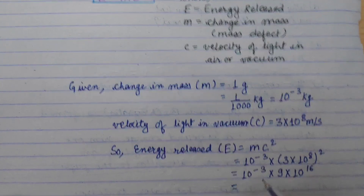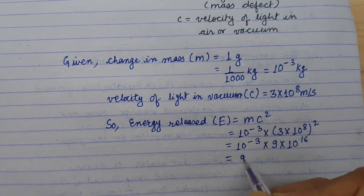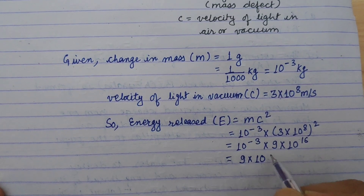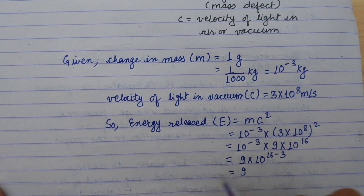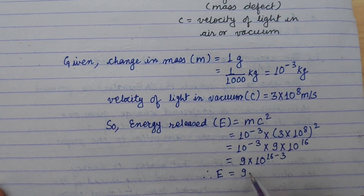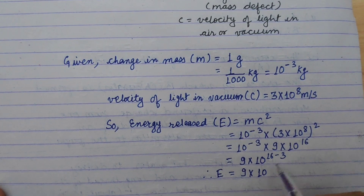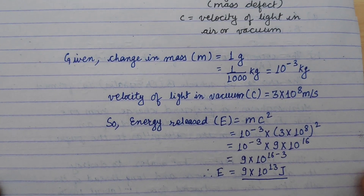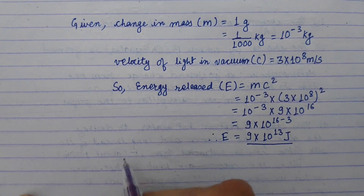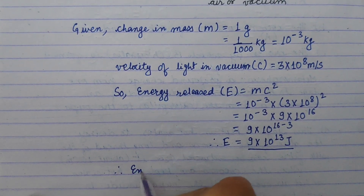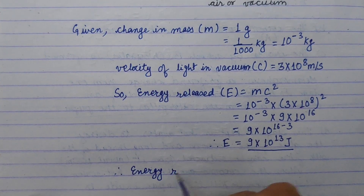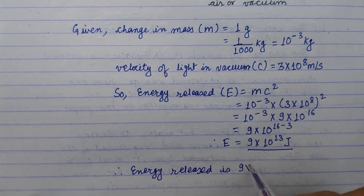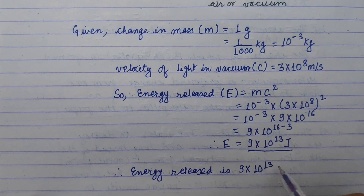We can simplify it further. Using the indices: 16 minus 3 gives 13. So finally, we can calculate the amount of energy released: 9 into 10 to the power of 13 Joules. Therefore, energy released is 9 into 10 to the power of 13 Joules.